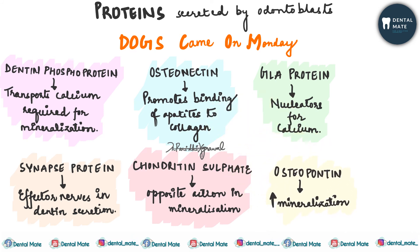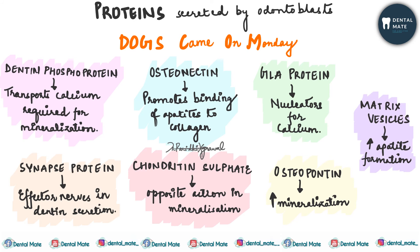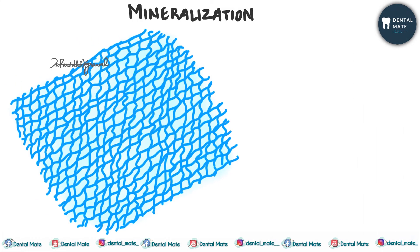Osteopontin, a phosphoprotein, promotes mineralization. Matrix vesicles, released by odontoblasts, promote the formation of apatite crystals prior to their release. They contain enzymes such as alkaline phosphatase, which locally increases the concentration of phosphates and combines with calcium to form apatite crystals.